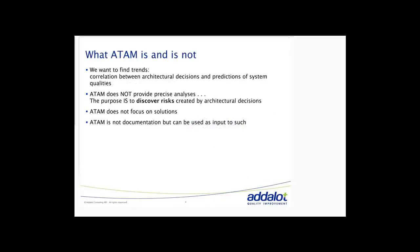So what ATAM is and is not: we want to find trends and correlation between the decisions and prediction of the system quality. It does not provide a precise analysis. The purpose is to discover risk created by the architecture decisions. ATAM does not focus on solutions and does not document the architecture, but it can be used as input for documentation.